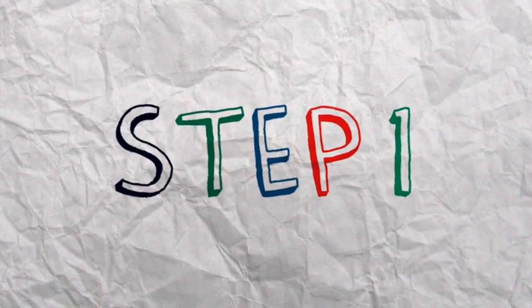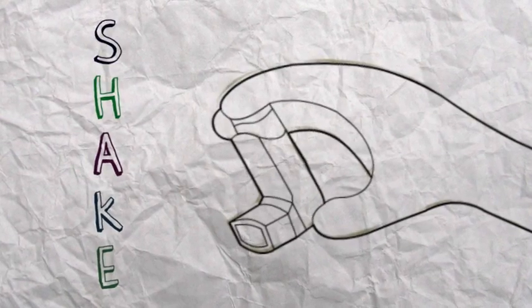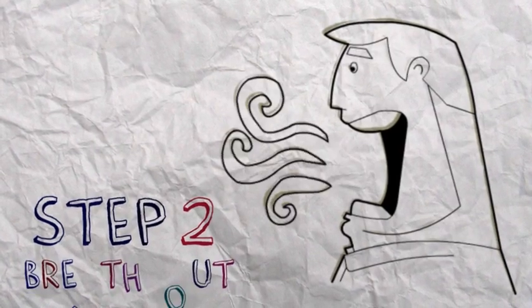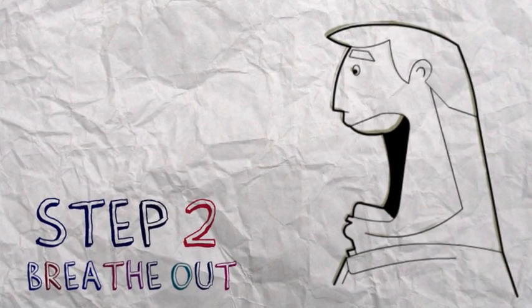Step 1. Take off the cap and shake the inhaler. Step 2. Breathe out all the way to empty your lungs, then place the inhaler into your mouth.